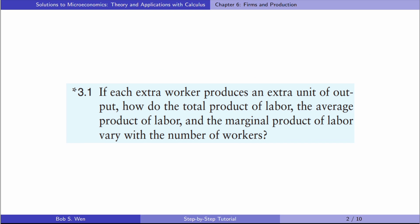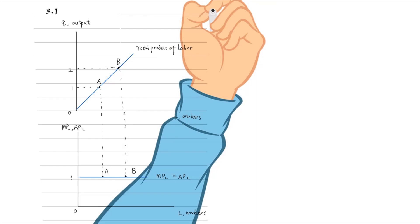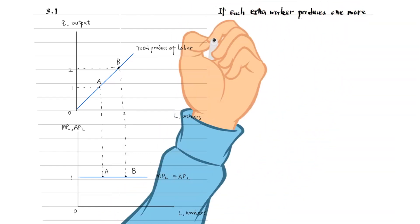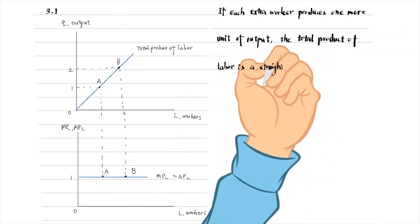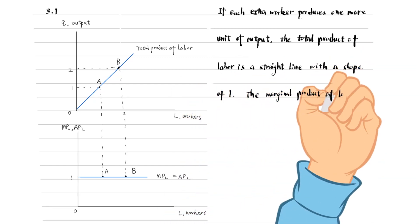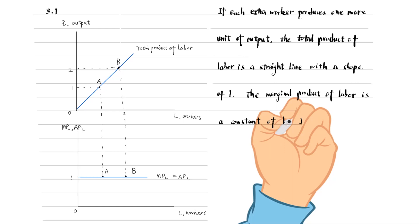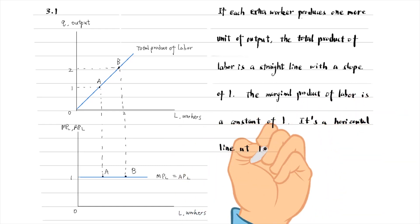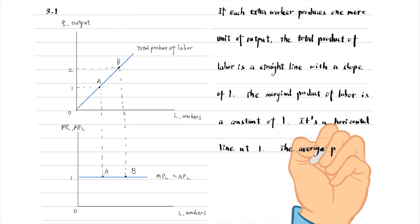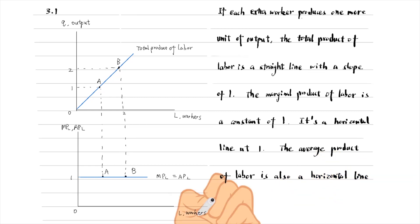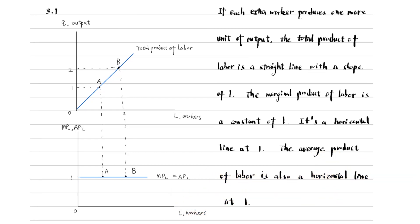Let's solve exercise 3.1. If each extra worker produces an extra unit of output, how do the total product of labor, the average product of labor, and the marginal product of labor vary with the number of workers? If each extra worker produces one more unit of output, then the total product of labor is a straight line with a slope of 1. The marginal product of labor is a constant of 1 — a horizontal line at 1. The average product of labor is the total product divided by the total number of workers; it is also a horizontal line at 1. This case does not illustrate the law of diminishing marginal return.